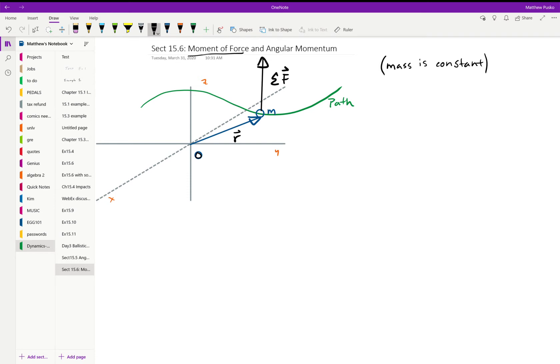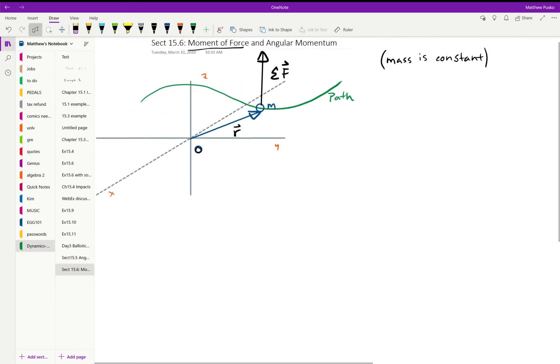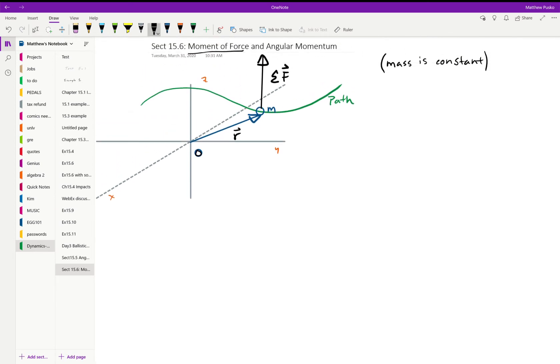All right, so 15.6 talks about the relationship between the moment of a force and angular momentum. Let's look at what our force definition was first, though. Right here on this diagram we have an object going along a path and it's subject to some forces. The resultant force looks like this, and we're going to measure that from some reference point O because we want to know the moment and the angular momentum about that point.